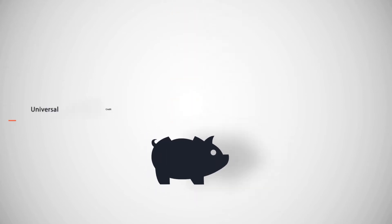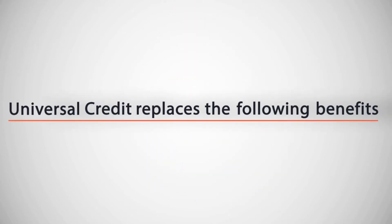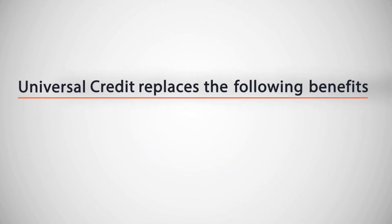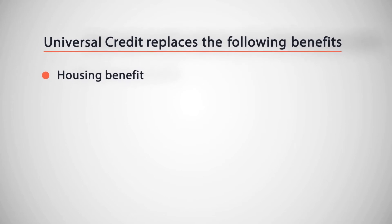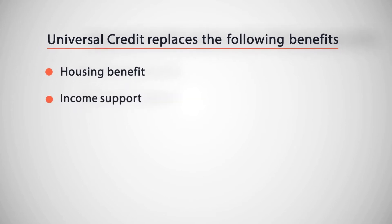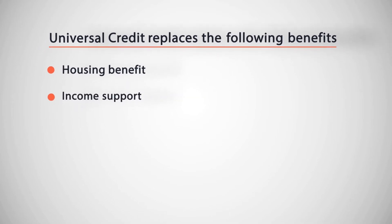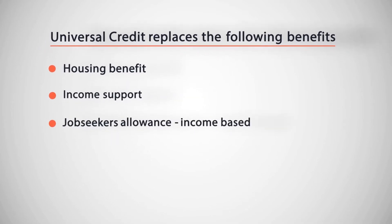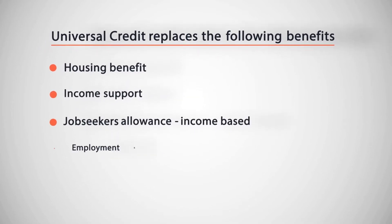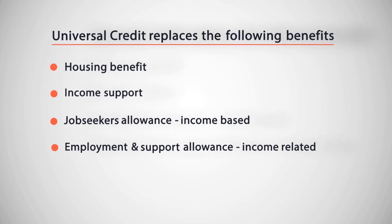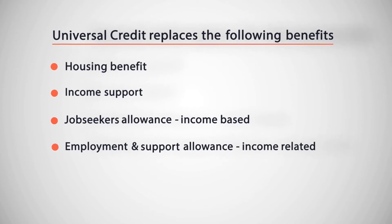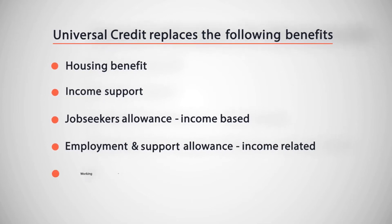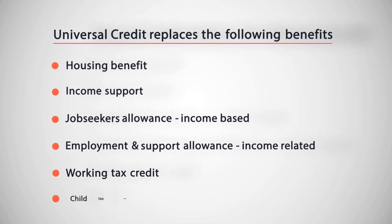Universal Credit replaces six government benefits: Housing Benefit, Income Support, Job Seekers Allowance Income Based, Employment and Support Allowance Income Related, Working Tax Credit, and Child Tax Credit.